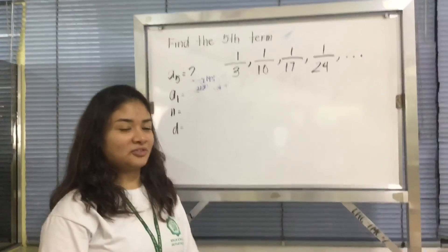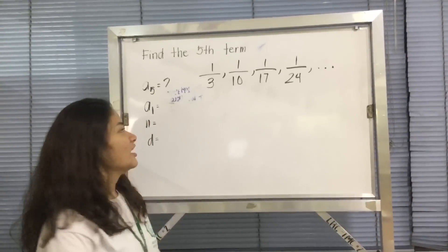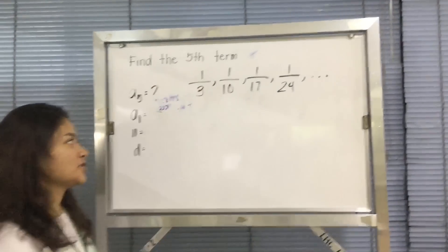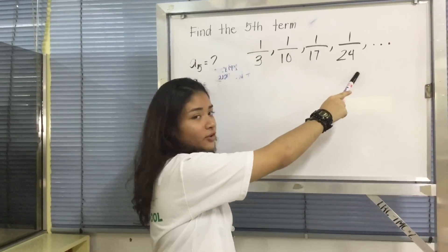Now you know the formula for harmonic sequences. Let's try to solve one. Given this sequence, find the fifth term: one-third, one-tenth, one-seventh, and one-twenty-four.